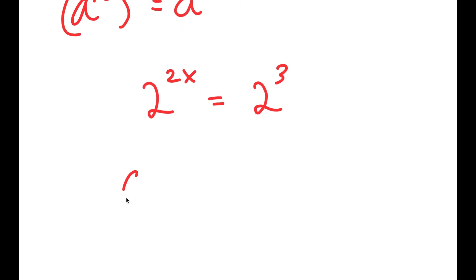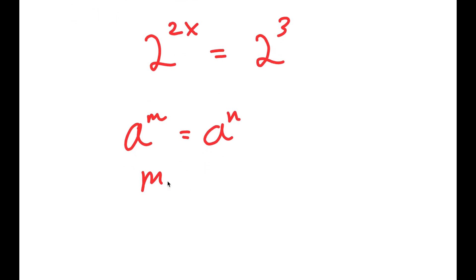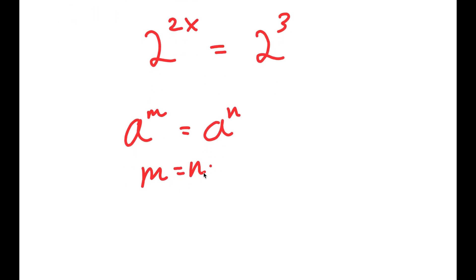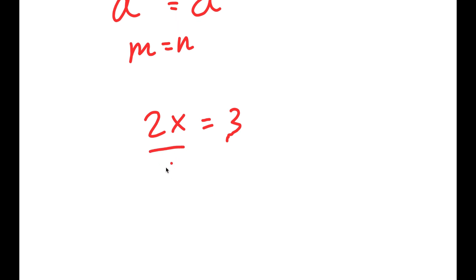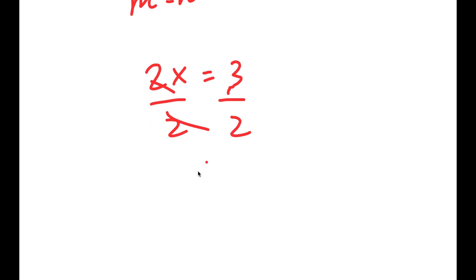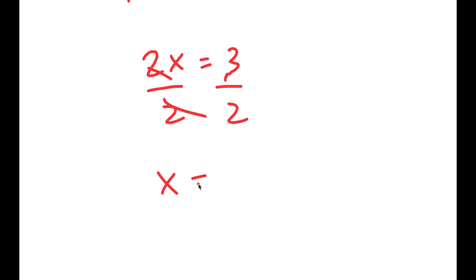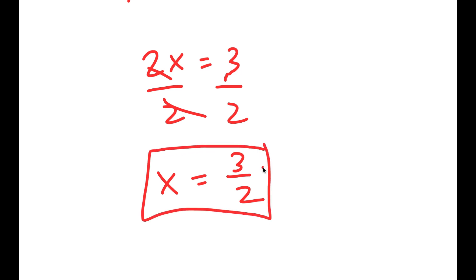Now if I have something in the form a to the power of m is equal to a to the power of n, this means that m is equal to n. So in this case 2x is equal to 3, and if I divide both sides by 2, I get x is equal to 3 over 2. So this is my answer.